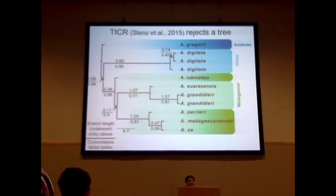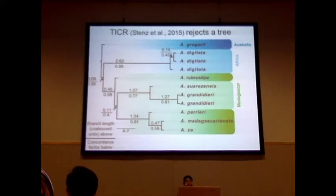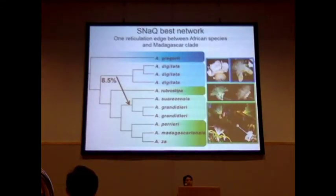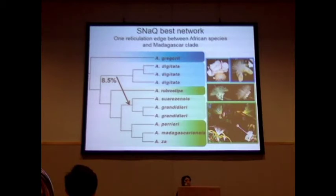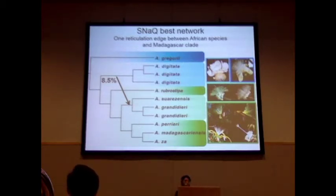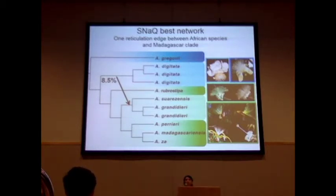To further identify exactly where on the tree hybridization could have occurred, we used the program SNAQ. We tested for several different hybridization events and were able to recover one that occurred relatively deep in time — a hybridization event accounting for approximately 8.5% of genes analyzed, from the African species into one of the Madagascar clades. We were not expecting this result at all, but biologically it does make sense, as it could account for some of the observed floral homoplasy within the group.